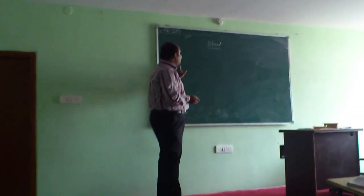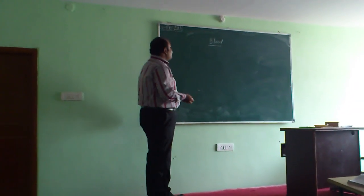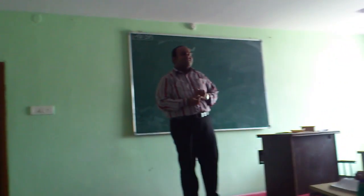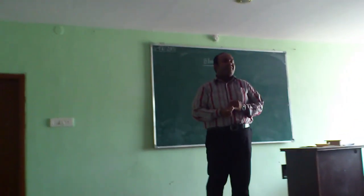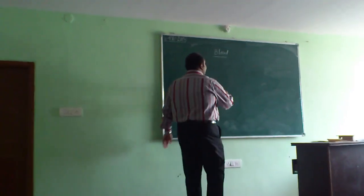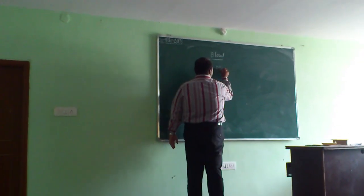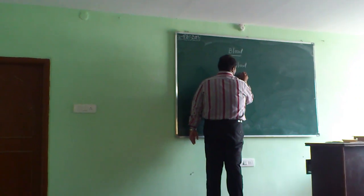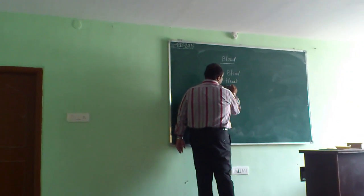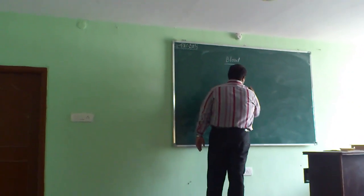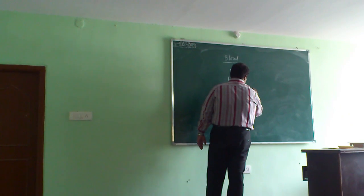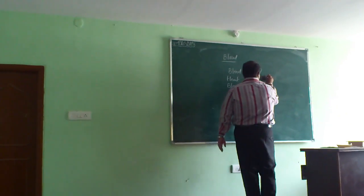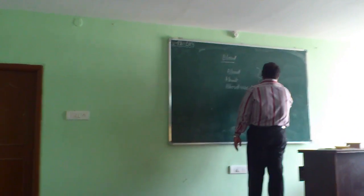Today we will see about blood. Blood is a component of the cardiovascular system. The cardiovascular system consists of three components: blood, blood vessels, and heart. Together these three components form the cardiovascular system.